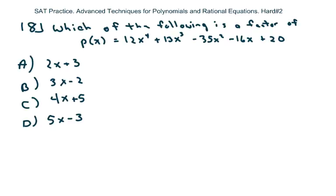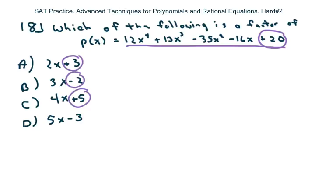The first question: we have three problems here. Which of the following is a factor of p(x) equals this polynomial? We're going to look at the constants first and eliminate. Our constant is 20. Since 3 doesn't divide 20, options a and d can't be the answer.